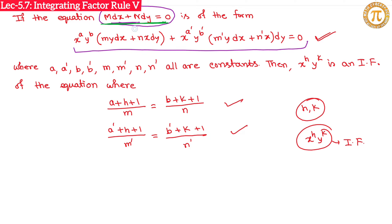So the process is: given M dx + N dy = 0, convert the equation into the general form x^a y^b ... to find a, a', b, b', m, n, m', n'. Then x^h y^k is your integrating factor, with h and k found by solving those two equations.